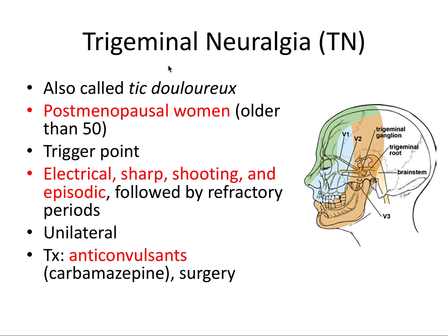Trigeminal neuralgia — this is definitely the most important slide of this entire video. You're almost guaranteed to get at least one question on trigeminal neuralgia, either on day one or day two of the exam, so I would strongly encourage you to commit all of this information to memory. Trigeminal neuralgia is also called tic douloureux, and it affects mostly postmenopausal women older than 50. The sixth decade of life is most common. Women are most commonly affected, but it can occur at any age.